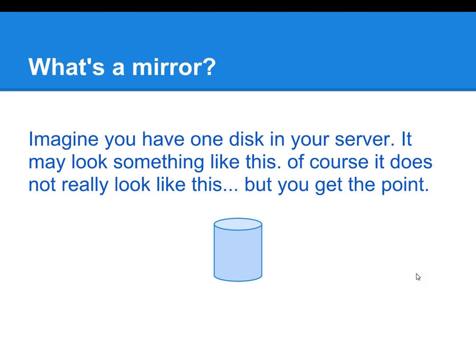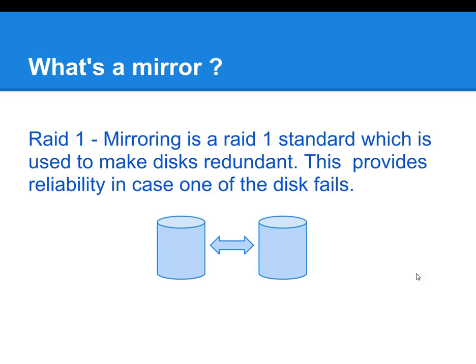What's a mirror? Just about any system has a disk. Mirroring is basically duplicating the information on the disk in your system to provide redundancy. This is known as a RAID-1 configuration. In the event that the disks fail, your system will stay up and running because the other disks will resume operations.